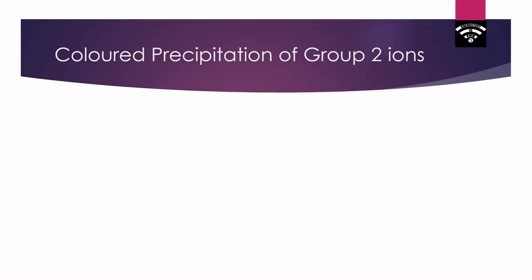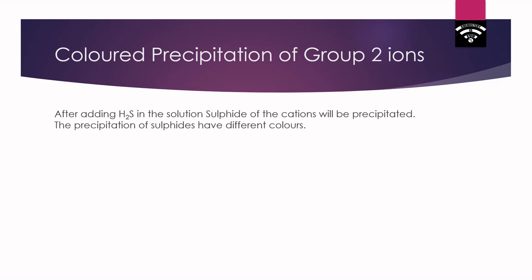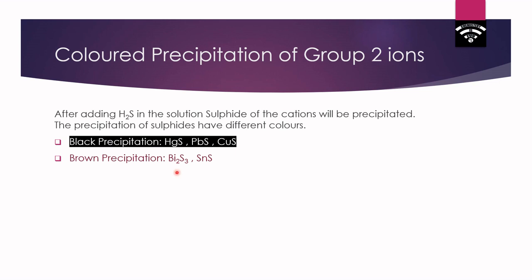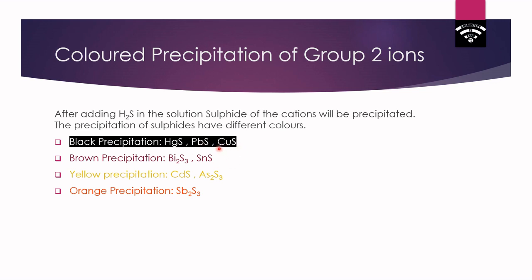If we acidify the solution and pass H2S, and Group 2 ions are present, we will find precipitation of various colors. HgS, lead sulfide, and copper sulfide give black precipitation; bismuth sulfide and tin sulfide give brown precipitation; cadmium sulfide and arsenic sulfide have a very good yellow color; and antimony sulfide gives orange precipitation. If you observe a particular color of precipitation, it helps identify which cation is present, but a mixture of colors — such as black and brown — requires confirmatory tests for each ion.